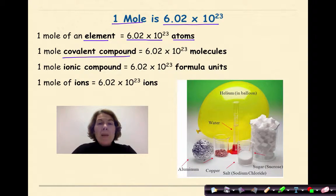One mole of a covalent compound will be 6.02 times 10 to the 23rd molecules. One mole of an ionic compound is 6.02 times 10 to the 23rd formula units. And one mole of ions will be 6.02 times 10 to the 23rd ions.